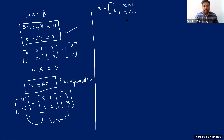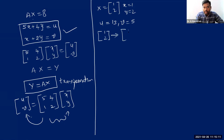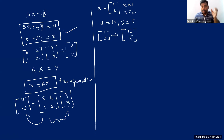Taking x equals 1, y equals 2: substituting into the equations gives u equals 5 times 1 plus 4 times 2 equals 5 plus 8 equals 13. And v equals 1 plus 2 times 2 equals 1 plus 4 equals 5. So the original vector (1, 2) is transformed into a new vector (13, 5). This confirms that the transformation y equals Ax transforms (1, 2) into (13, 5).